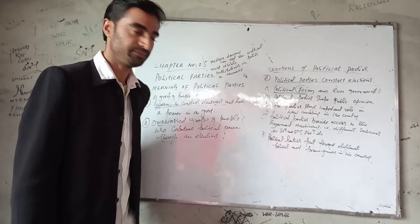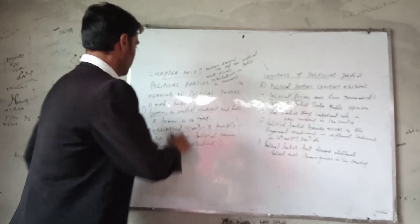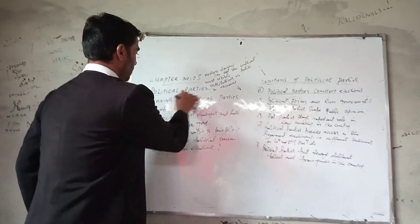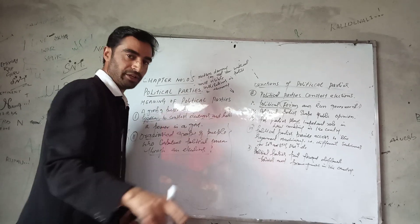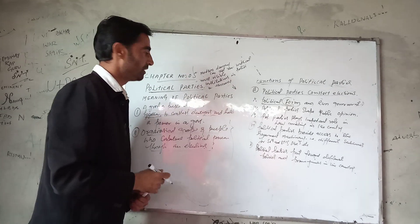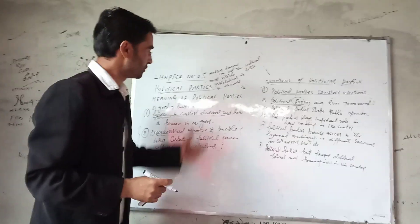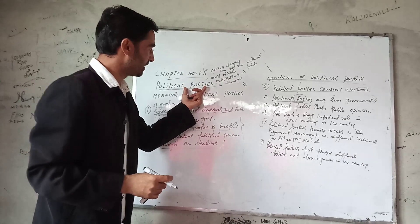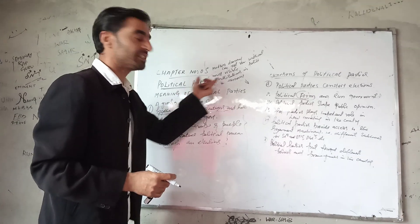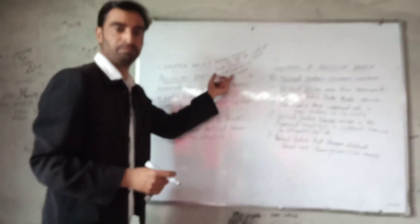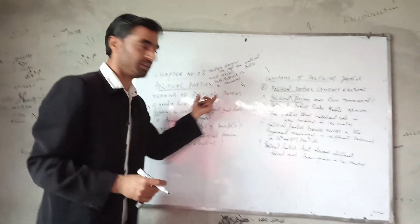So we will start. Political parties are very important in a democracy. They play a very important role because without political parties a democracy cannot run. Simply put, democracy relies on political parties. Political parties are the most visible institutions of a democracy.